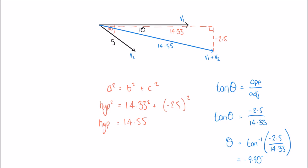Now that we've calculated the length and angle of our new vector V1 plus V2, we can write it as a proper formula. Just like V1 and V2 at the start of this example, we can say: V1 + V2 = 14.55 sin(ωt − 9.90°). That brings us to the end of part one of this video. In part two, we'll look at how to subtract these waveforms from one another.